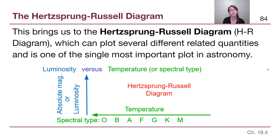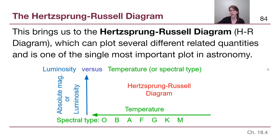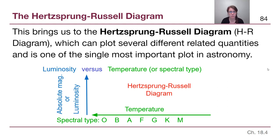This brings us to the Hertzsprung-Russell diagram, which is the single most important diagram in our textbook, and one of the most important plots in all of astronomy. You can go on the internet and search HR diagram and you'll find tons of examples. We're going to have two or three examples on our slides, and there are plenty more you can find online that don't have Creative Commons licenses for me to put in the slides, but they will still be useful to you.